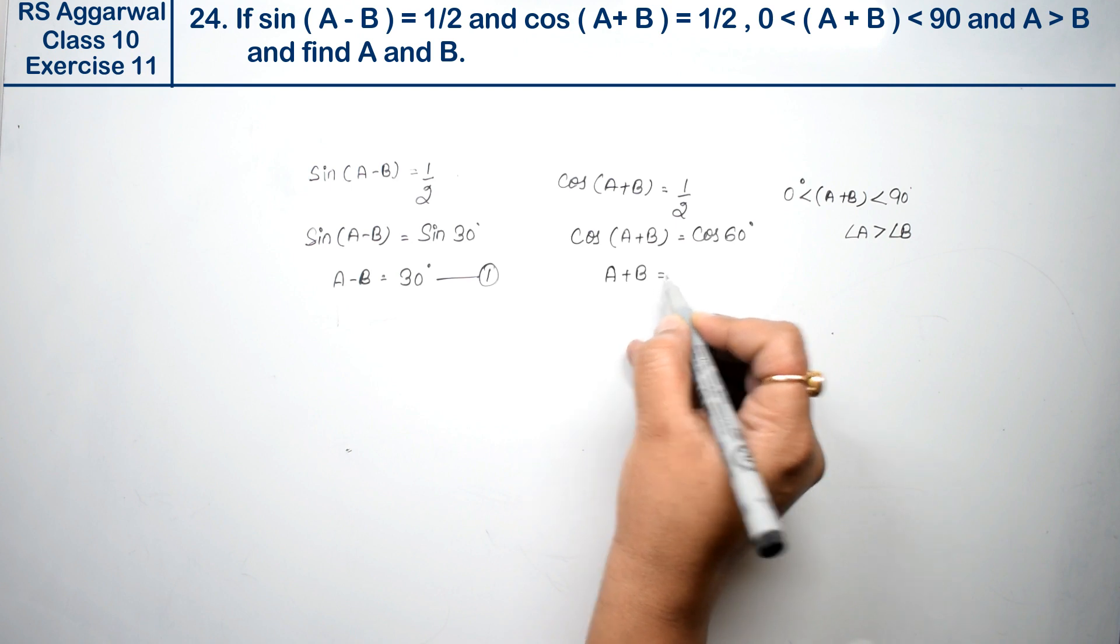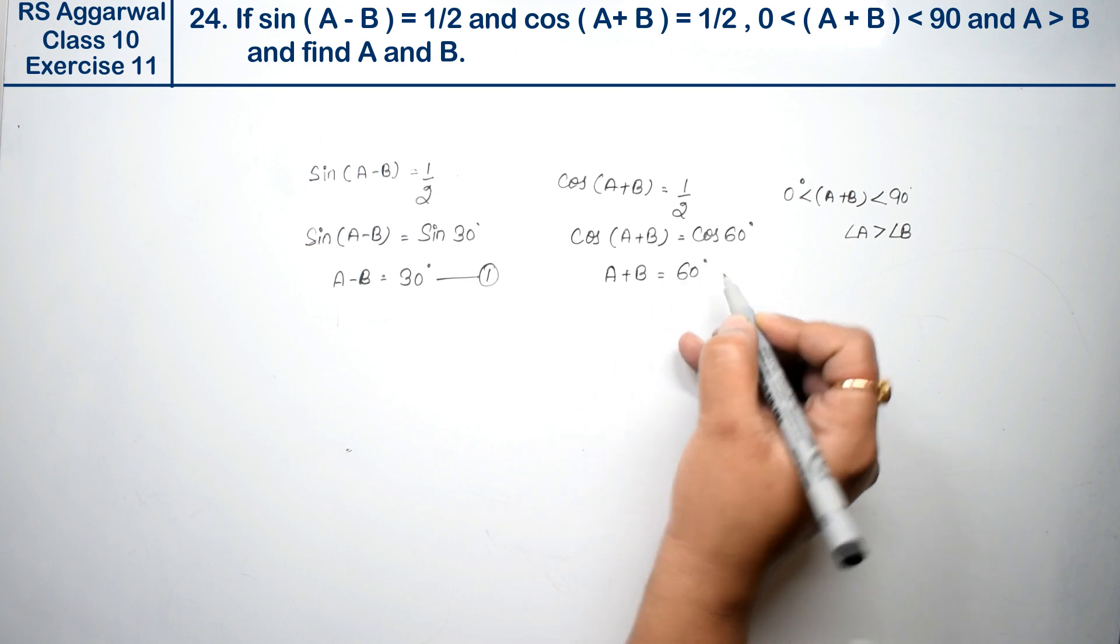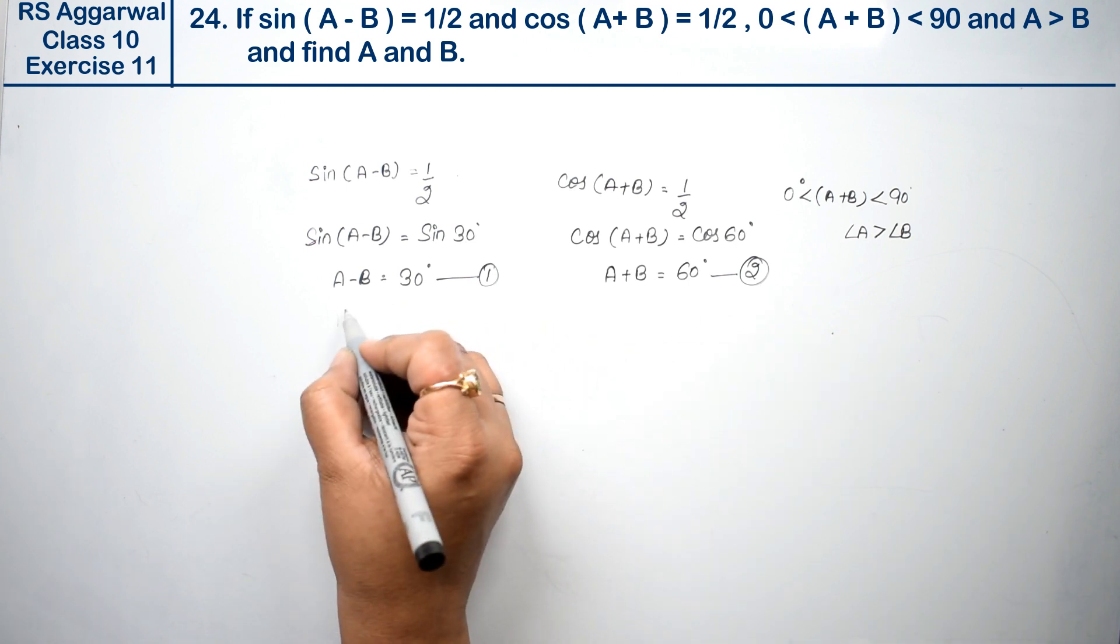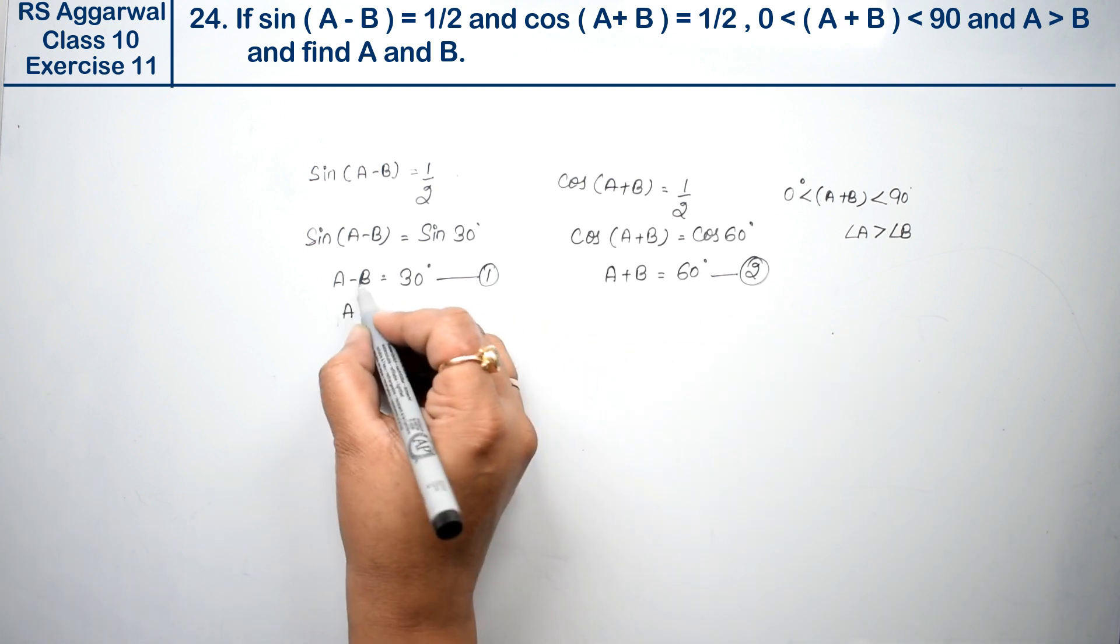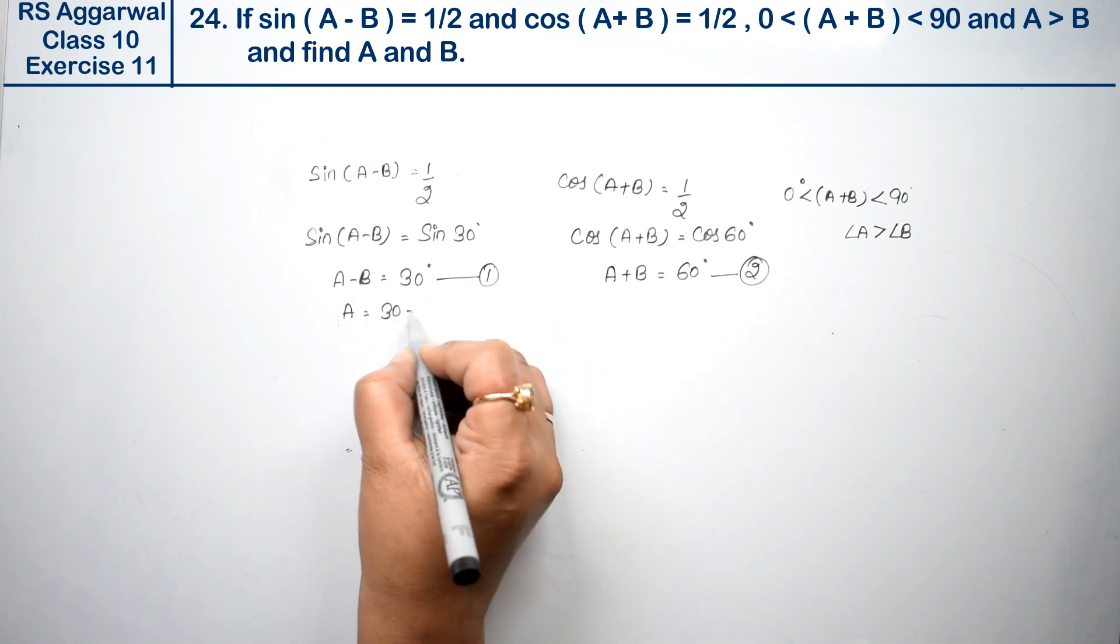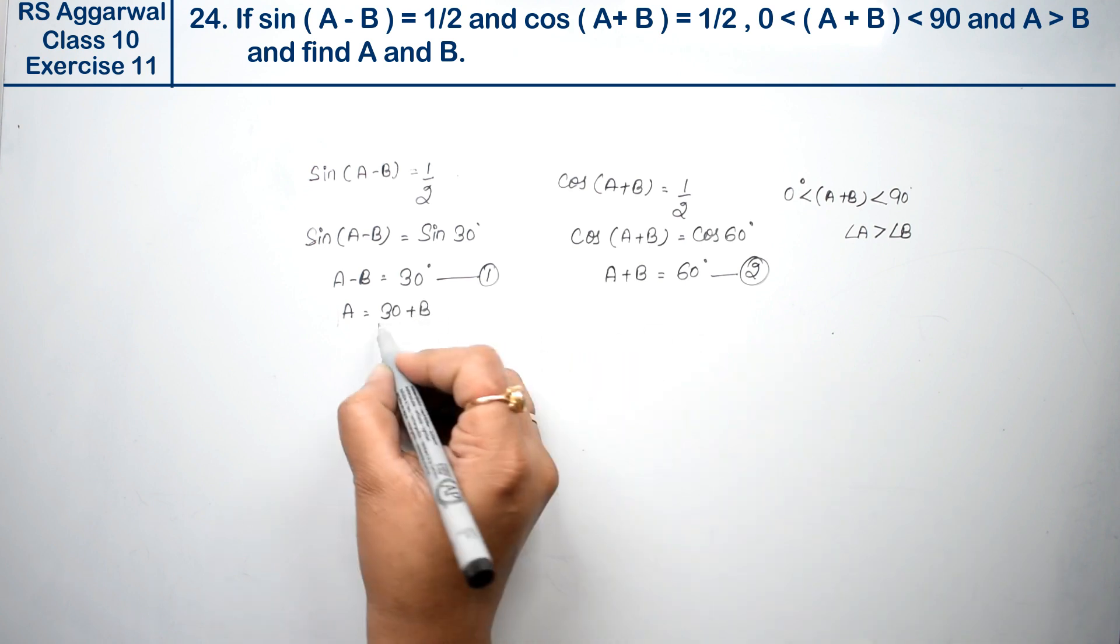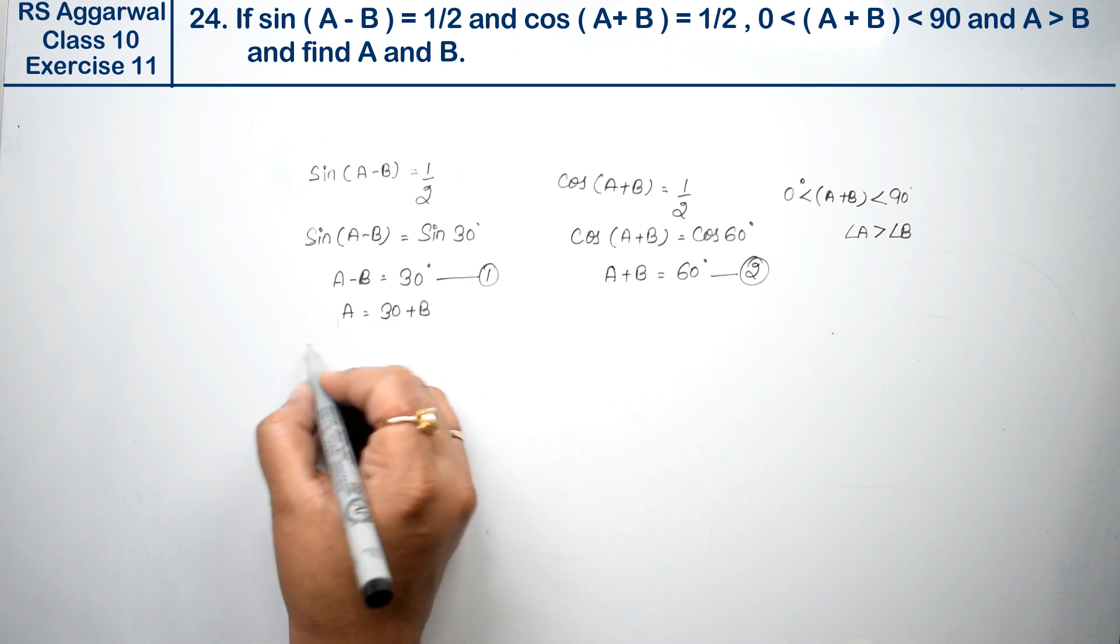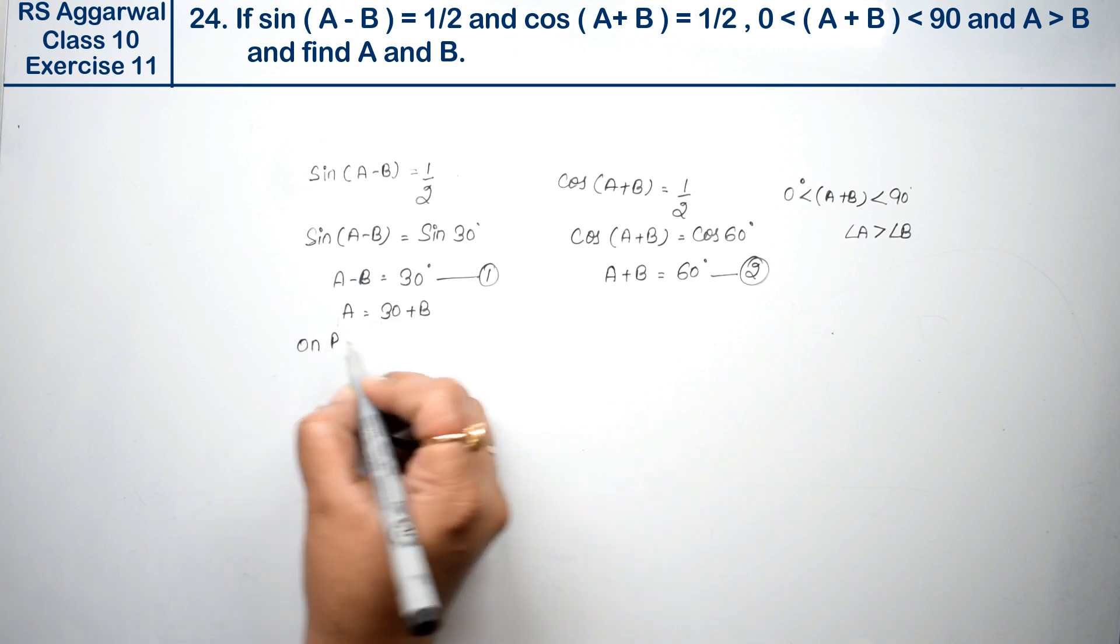And here A + B ki value is 60 degree, this is our second equation. From this we found A ki value: A is 30 plus B. We can write this.